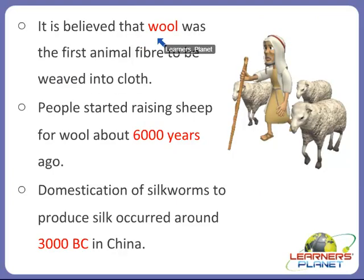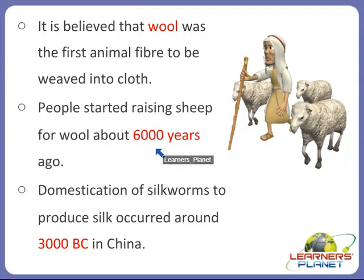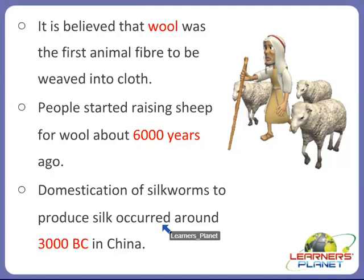Wool was the first animal fiber to be weaved into cloth, and people started raising sheep for wool about 6,000 years ago. Even the domestication of silkworms to produce silk occurred around 3,000 BC in China — BC means before Christ. People started using animal skins, animal hair, or fur, and then they started using animal fiber which was weaved into cloth. After wool, in India cotton came into widespread use around 3,000 BC, and fiber plants such as cotton and hemp came into use after the development of agriculture. These fibers were spun into thread and made into cloths.